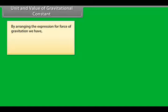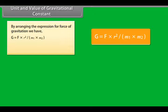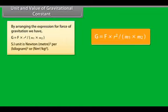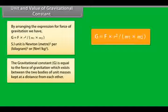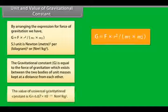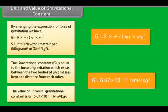Unit and value of gravitational constant: by arranging the expression for force of gravitation we have G = F × R² / (M1 × M2). The SI unit is Newton meter square per kilogram square. The gravitational constant G equals the force of gravitation which exists between two bodies of unit masses kept at a unit distance from each other. The value of universal gravitational constant G = 6.67 × 10⁻¹¹ Newton meter square per kg square.